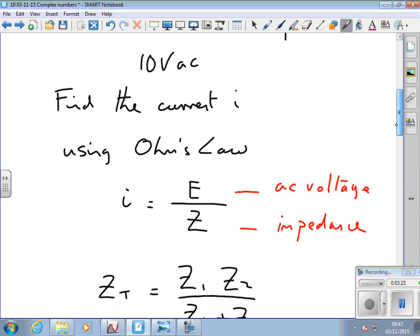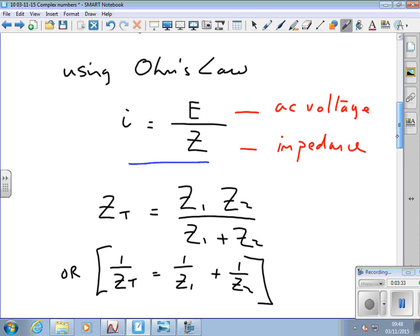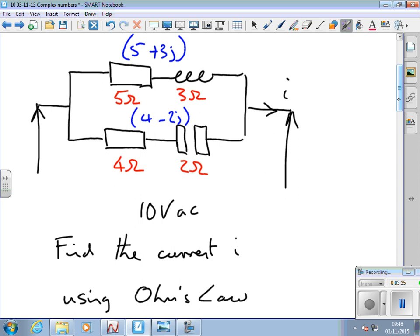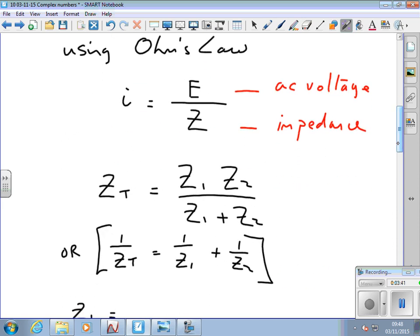But apart from that, I just use Ohm's law. Hopefully you're familiar with these formulas: current is voltage over resistance, E over Z, and also for resistance in parallel, which these are - these two components are in parallel. The total resistance is the product over the sum: Z1 times Z2 over Z1 plus Z2. Or I could use this, but for two, use the top one.